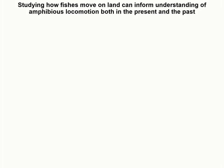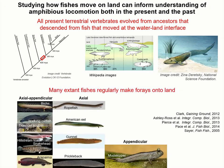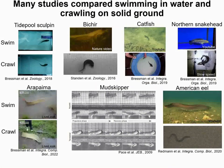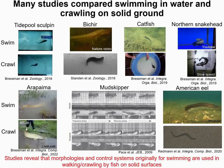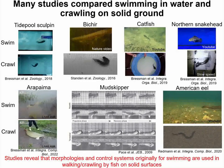Studying how fishes move onto land can help inform the understanding of amphibious locomotion both in the present and the past. Early fishes transitioning from swimming in water to moving onto land ultimately led to all the terrestrial vertebrates present today. Many of the extant fishes also still make forays onto land. Many studies have investigated how these fishes move on solid surfaces and often compare them with their aquatic locomotion, revealing how they use morphologies and control systems originally made for swimming for terrestrial movement.